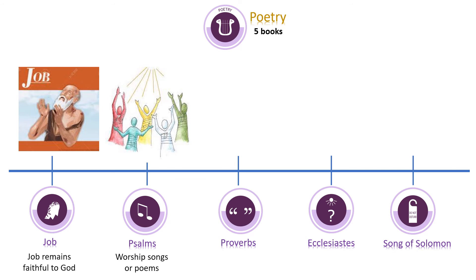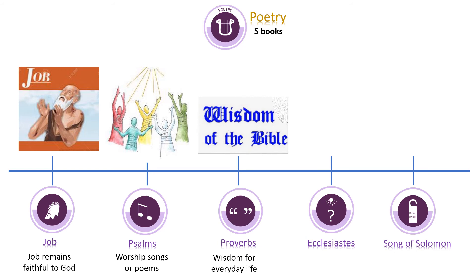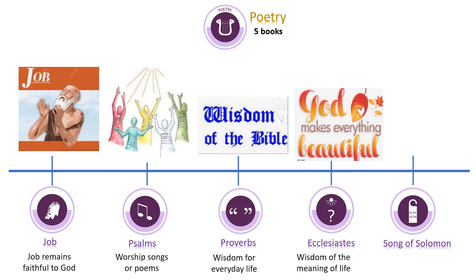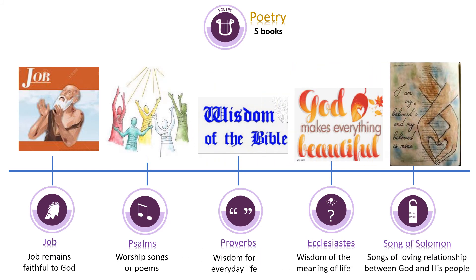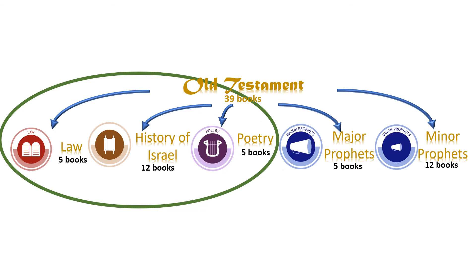Do you know the longest Psalm? It is Psalm 119. And the shortest is Psalm 117. Proverbs is written by Solomon and has wise sayings. The theme of Ecclesiastes is about the wisdom of the meaning of life, also written by Solomon. The theme of the book of Song of Solomon is a loving relationship between God and his people, the Israelites.